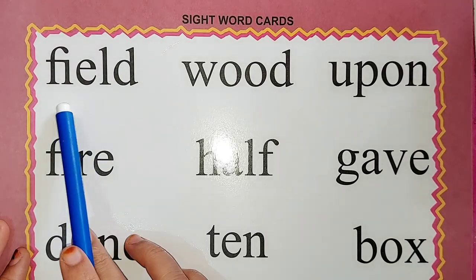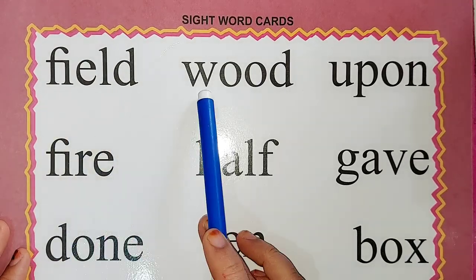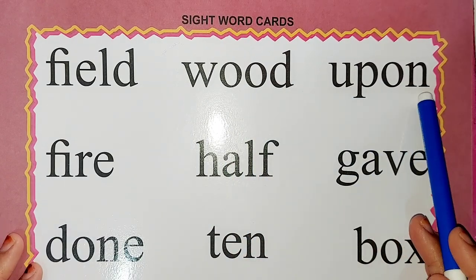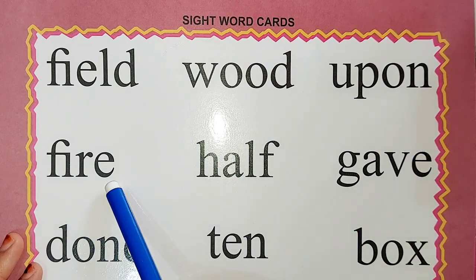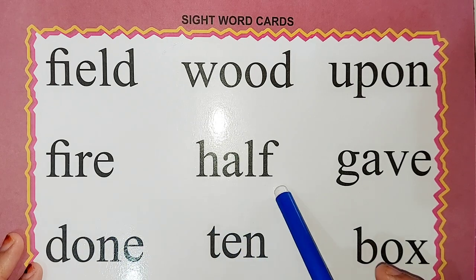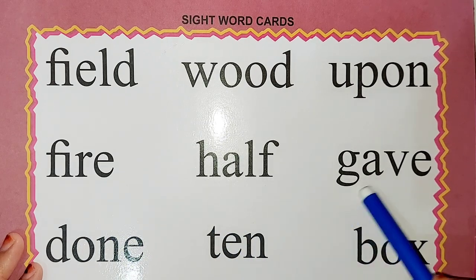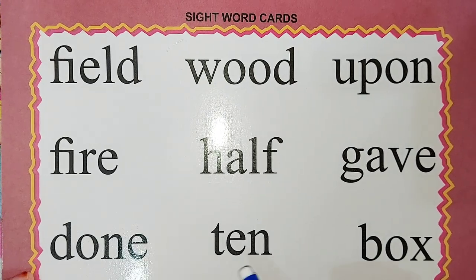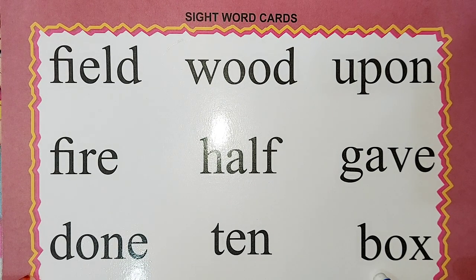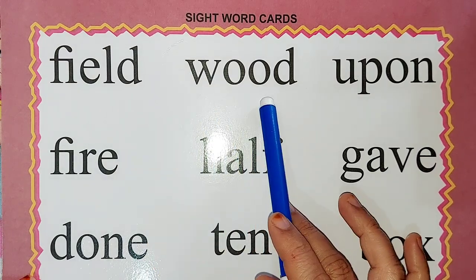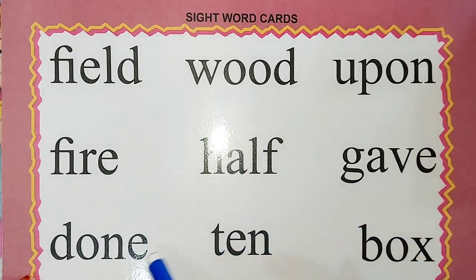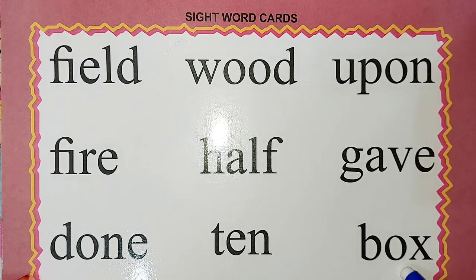The next word is F-I-E-L-D: field. W-O-O-D: would. U-P-O-N: upon. F-I-R-E: fire. H-A-L-F: half. G-A-V-E: gave. D-O-N-E: done. T-E-N: ten. B-O-X: box. Once again: field, would, upon, fire, half, gave, done, ten, box.